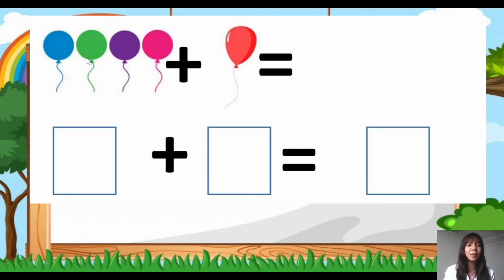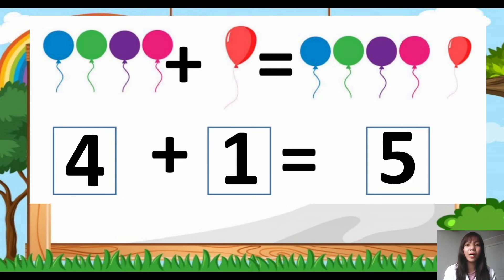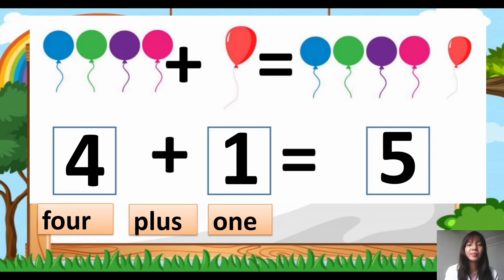Another one. Let's count the balloons. 1, 2, 3, 4. Four balloons plus another 1 balloon. So how many balloons are there in all? We have 5. We have 5 balloons. So the symbol: 4 + 1 = 5. The word: 4, spelled as F-O-U-R, plus 1 equals 5, F-I-V-E. So again, 4 + 1 = 5.